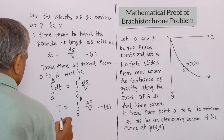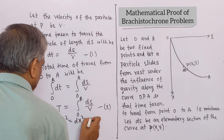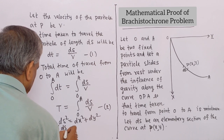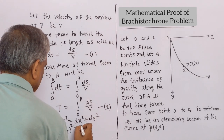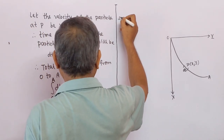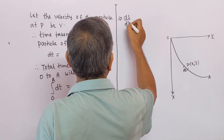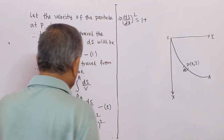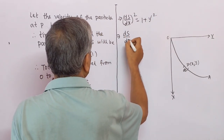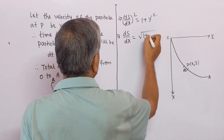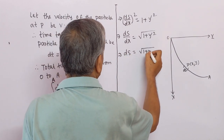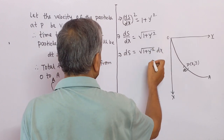Since DS² = DX² + DY², dividing both sides by DX² gives (DS/DX)² = 1 + (DY/DX)². This implies (DS/DX)² = 1 + y'², and therefore DS = √(1 + y'²) DX. Let this be equation number 3.